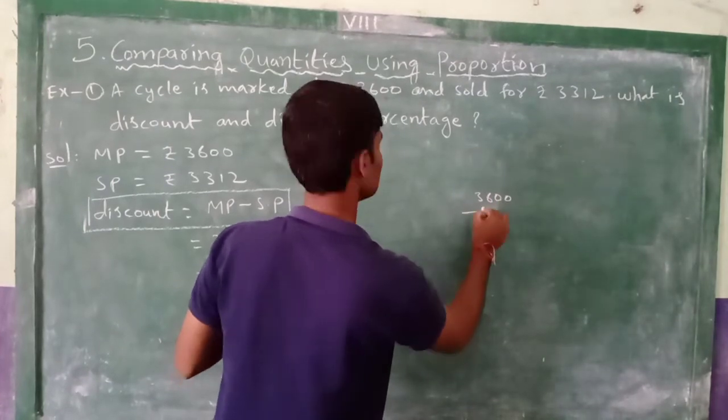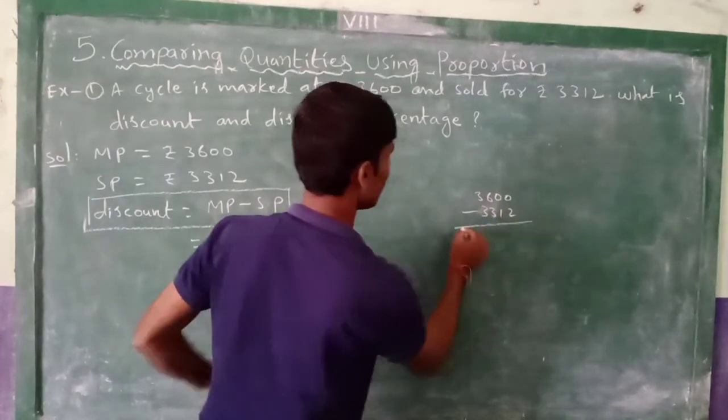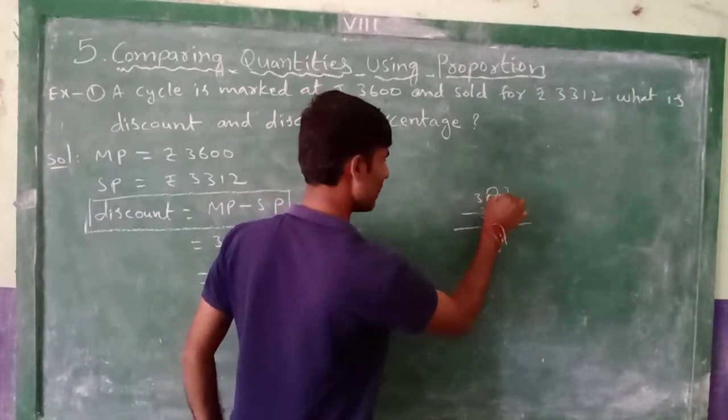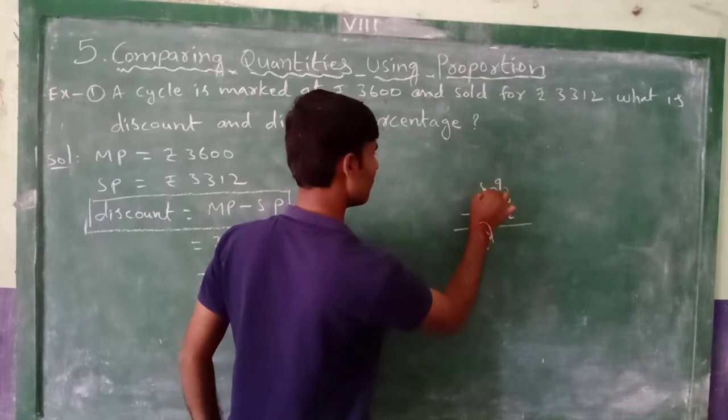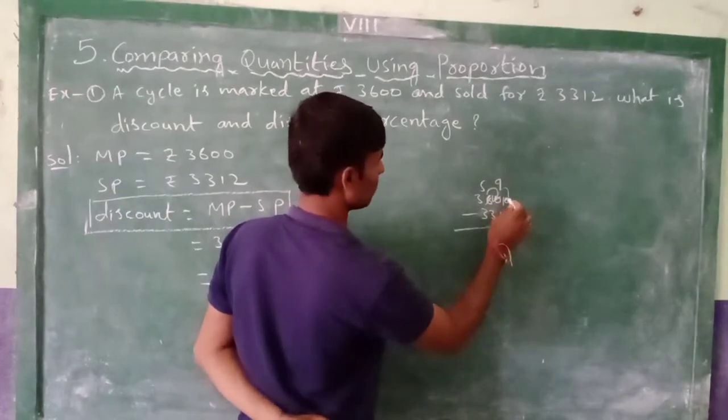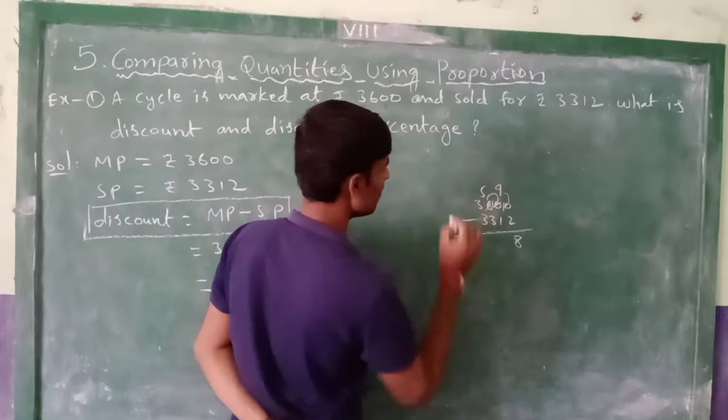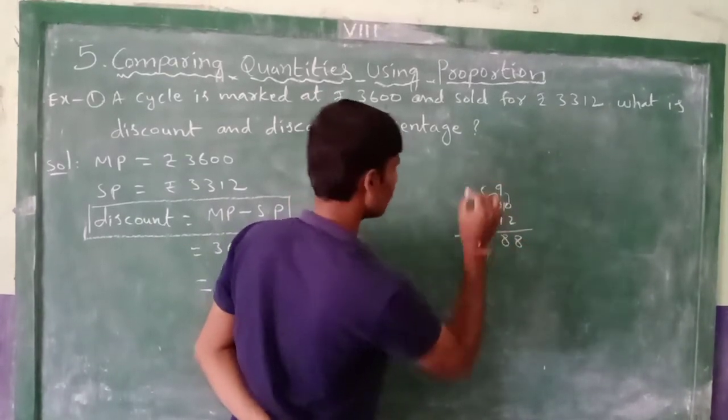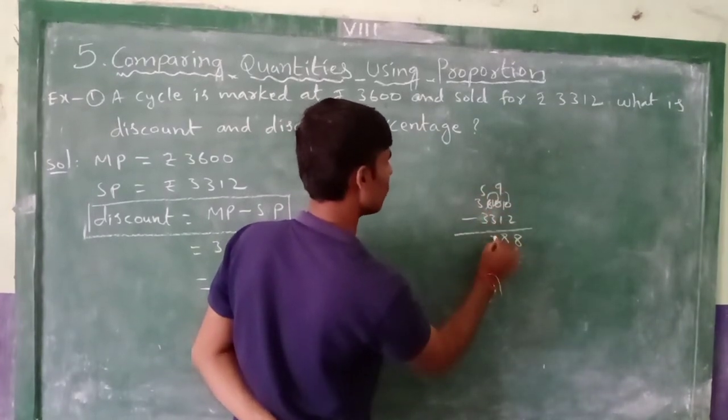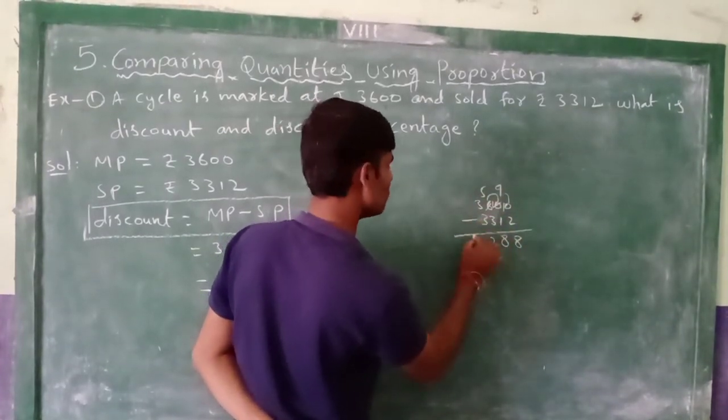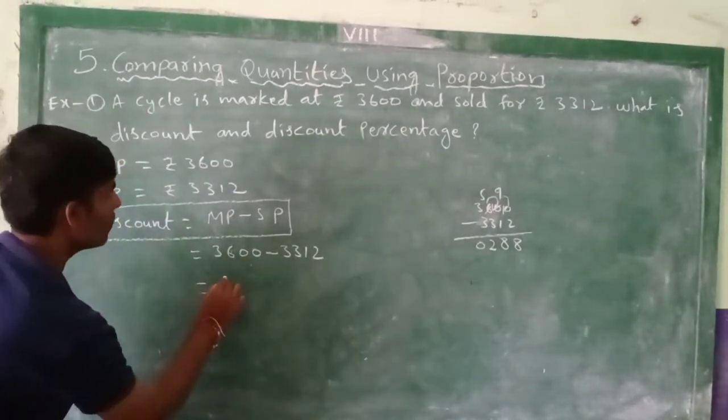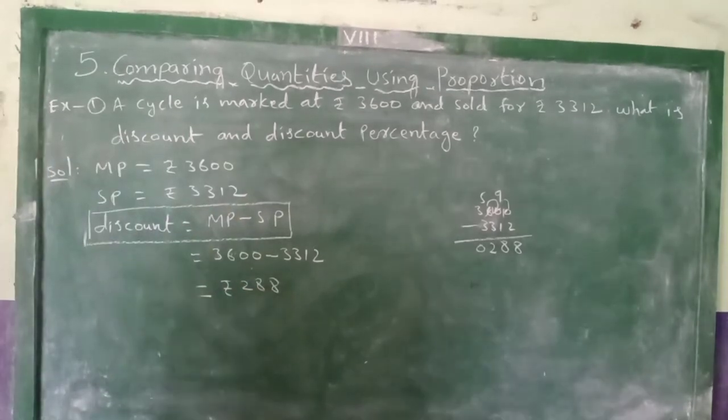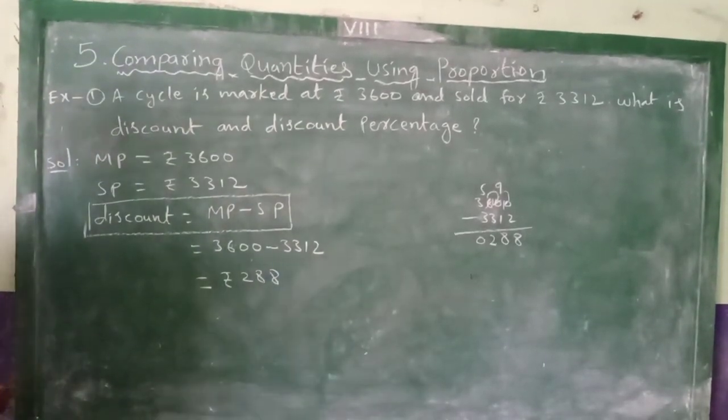3600 minus 3312. Borrow from here, it becomes 10. Borrow from here, this becomes 9, this one becomes 5. So 10 minus 2 equal to 8. Now 9 minus 1 equal to 8. 5 minus 3 equal to 2, 3 minus 3 equals 0. You got subtraction, Rupees 288.